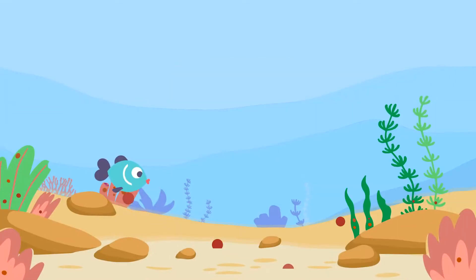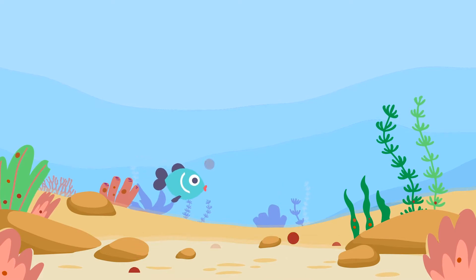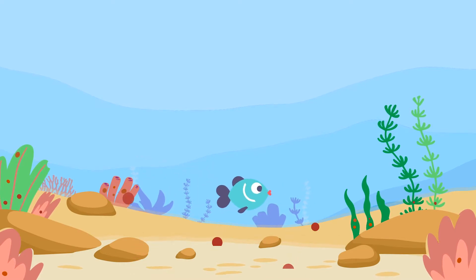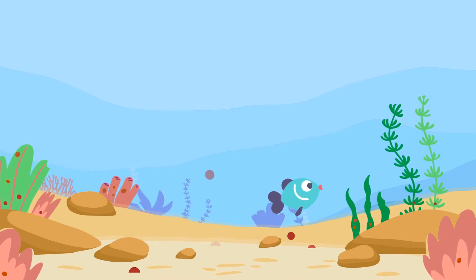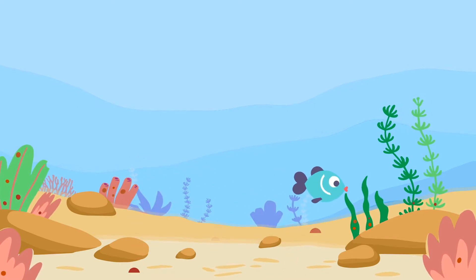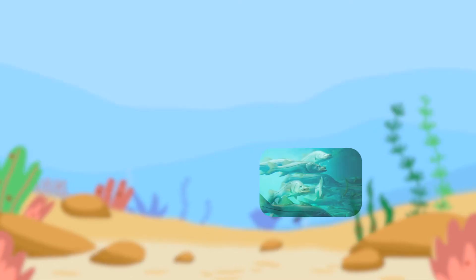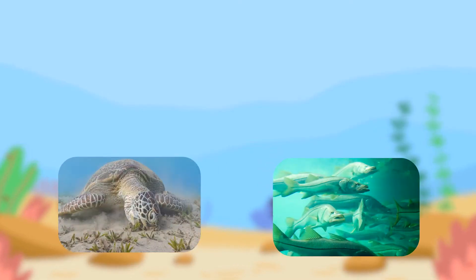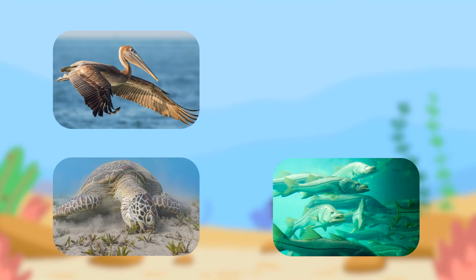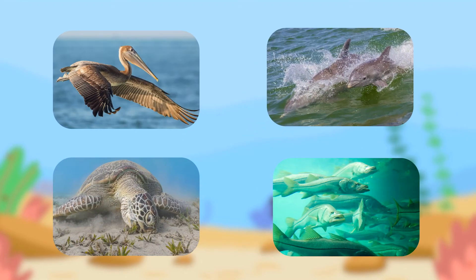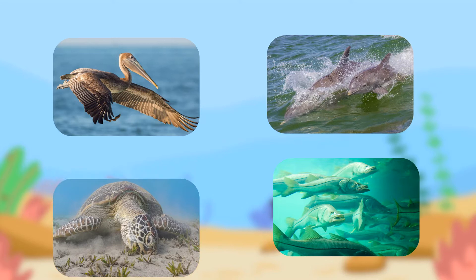The persistence of brevitoxins in marine animals and environments can eventually lead to the transfer of these toxins to larger animals, including fish, sea turtles, birds, and marine mammals.